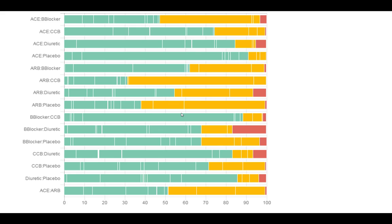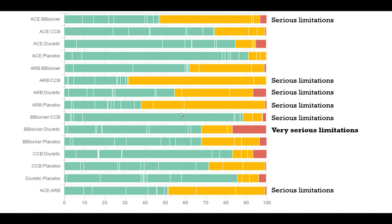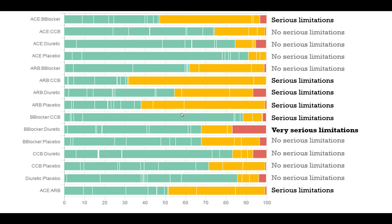Similar bars can be estimated for all other mixed treatment effects. Each bar can then be used to inform our decision about very serious study limitations, serious study limitations, or no serious study limitations.